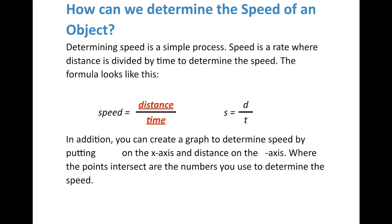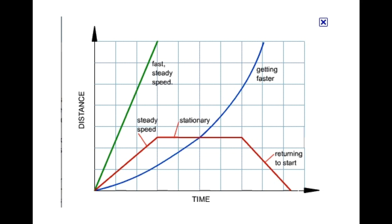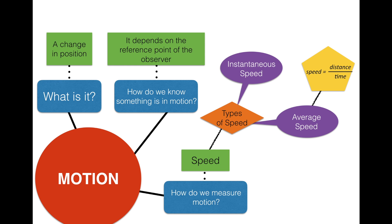In addition, we can figure out the speed of an object graphically by putting time on the x-axis and distance on the y-axis. Where the points intersect the x-y coordinates, you can use that distance and time to figure out the speed. The green line shows a fast, steady speed. When the line goes flat, the object is stationary — it's not increasing its distance. When it slopes downward, the object is returning to the start. The curved blue line represents acceleration, which we'll talk about in the next lesson.